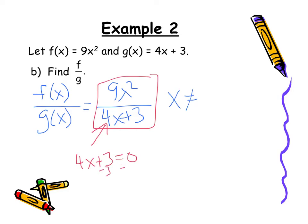So I subtract 3. I get 4x equals negative 3. I'm going to divide by 4 and I have x equals negative 3 fourths.